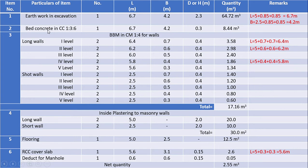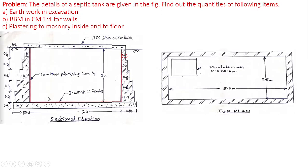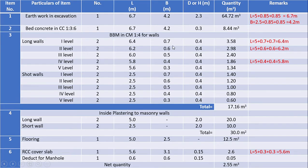The bed concrete is provided at the bottom of the pit for the full excavated area and the walls are built above the bed concrete and the flooring is done over the bed concrete at the end. Therefore, length and breadth of bed concrete is same as that of length and breadth of earthwork and thickness of bed concrete is equal to 0.3 meters and volume of bed concrete is equal to 8.44 meter cube.